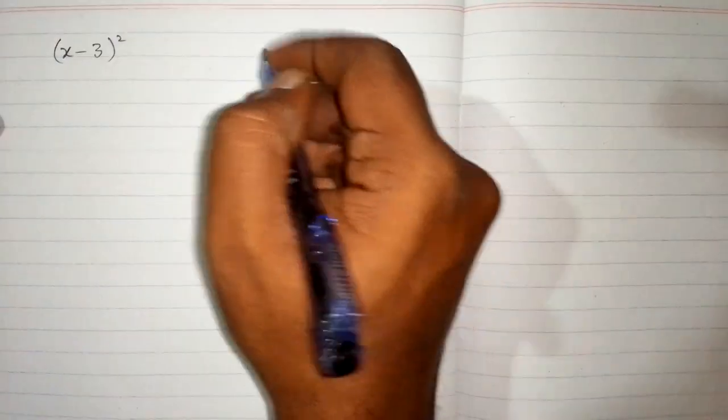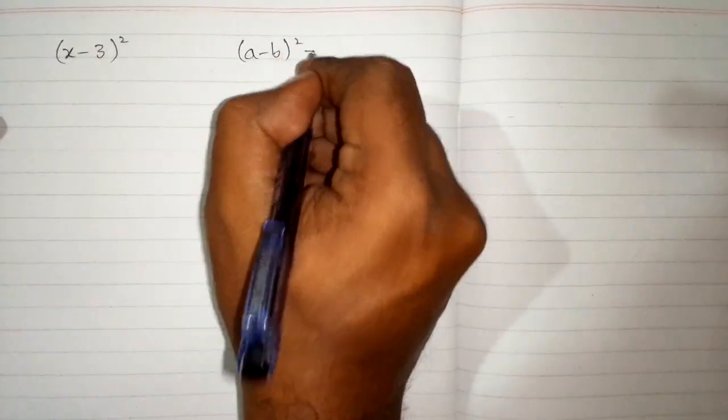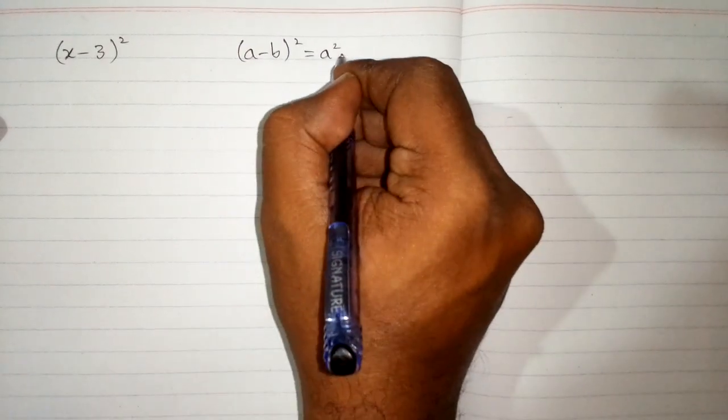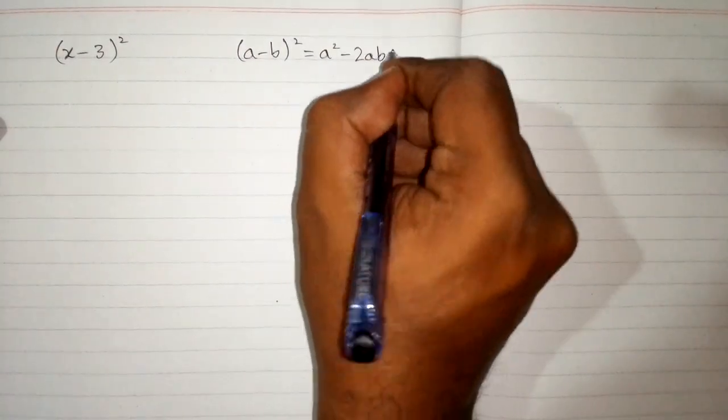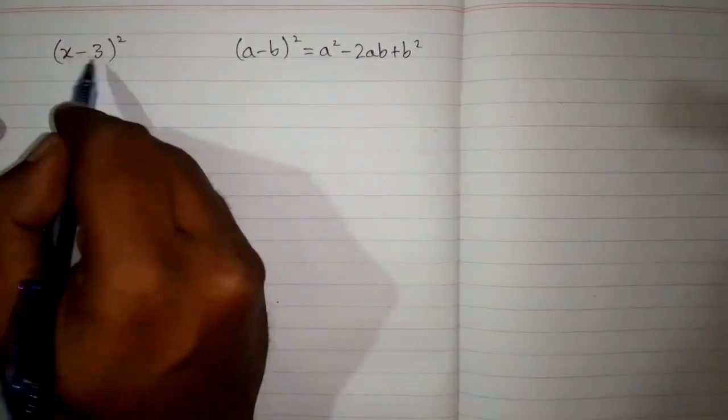In this video we will expand x minus 3 whole square by using an algebraic identity which is a minus b whole square equals a square minus 2ab plus b square. So we will use this formula to expand this expression.